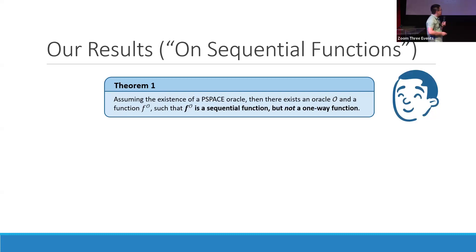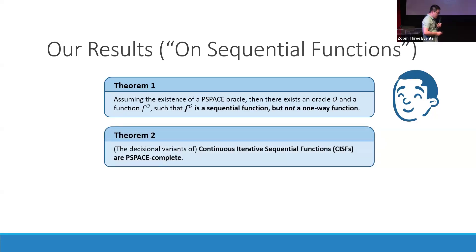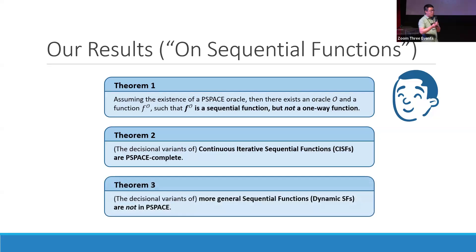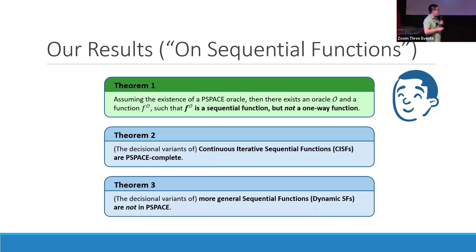So there is hope that I can actually find sequential functions within Passyland and get back to the real world. We also explore where sequential functions lie within the complexity landscape. We show two results: first, that continuous sequential functions, CISFs, are PSPACE-complete; and second, that a more general class called dynamic sequential functions are actually not in PSPACE. For today's talk, we'll focus on theorem 1, the main result, and go over some high-level intuitions and challenges encountered in the proof.